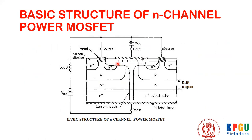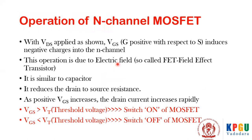When a sufficiently large gate-source voltage is applied, this results in a large drain current — in other words, switch-on of the MOSFET. It is a voltage-controlled device and the electric field set up by the gate-source voltage turns it on. That is why it is also known as a field effect transistor (FET). With VDS applied, VGS induces negative charge into the p-channel — this operation is due to the electric field.